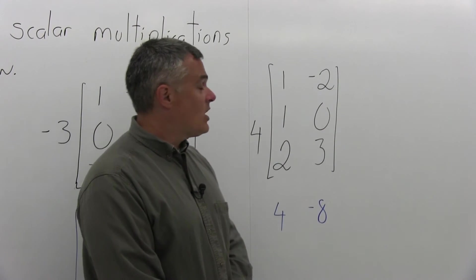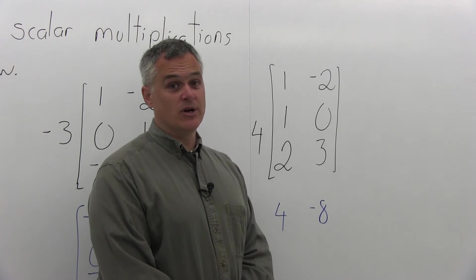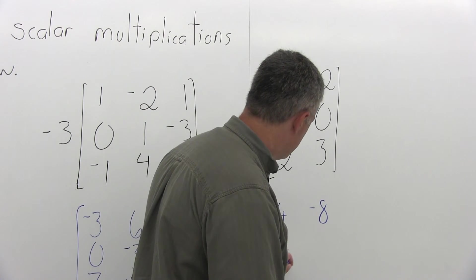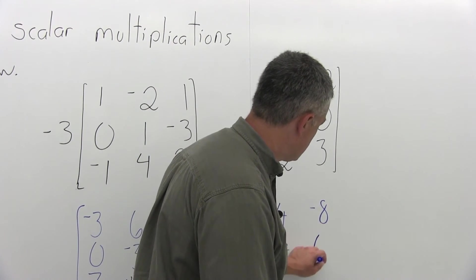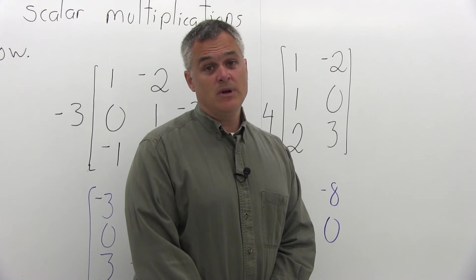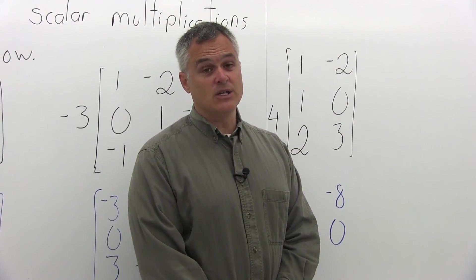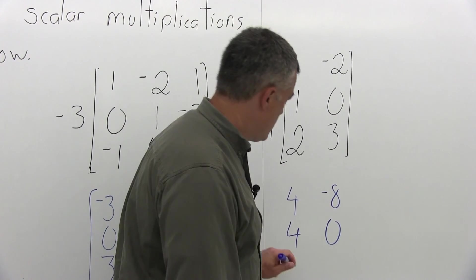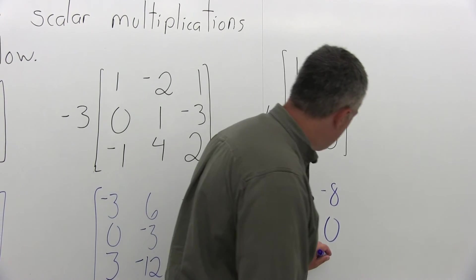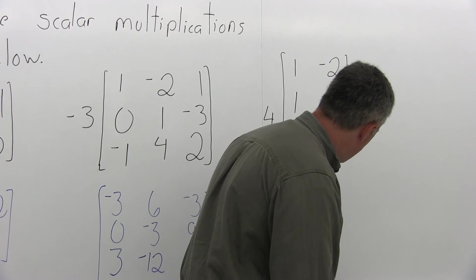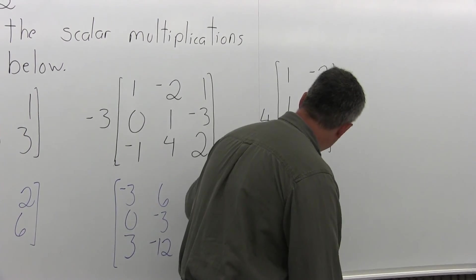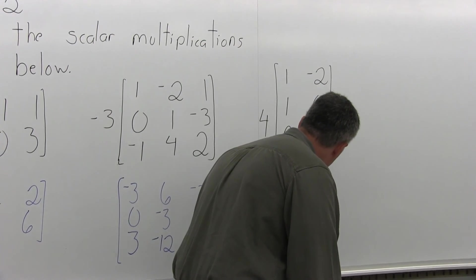The middle row has 1 and 0, so each gets multiplied times 4. The 1 becomes a 4, and the 0 stays 0. And then in the bottom row you have 2 and 3 — each one gets multiplied times 4. The 2 will become an 8, and the 3 will become a 12. Then I'll just put the brackets on that, and we're done.